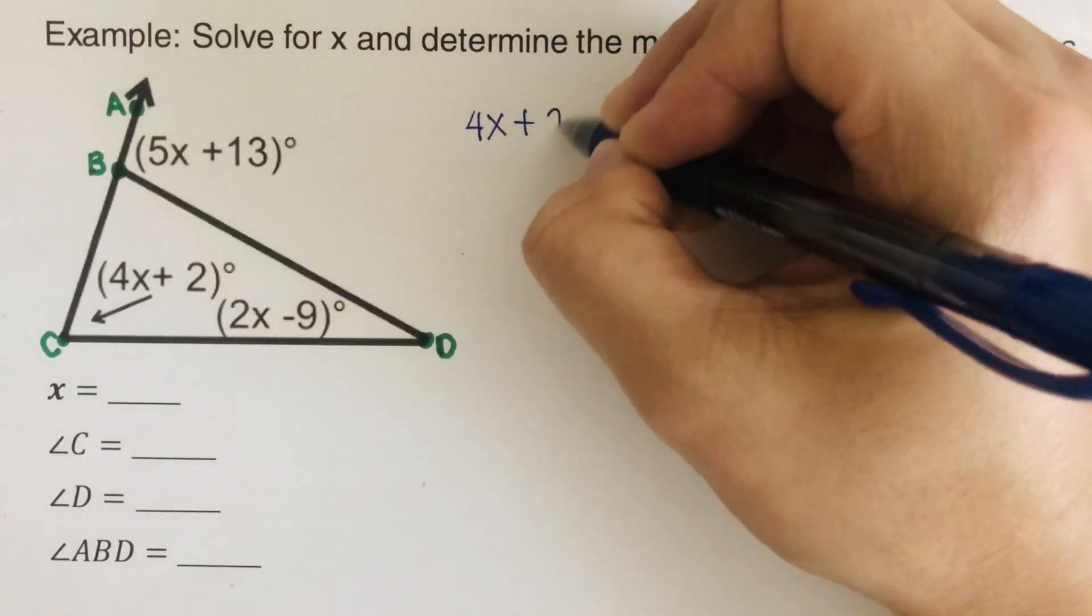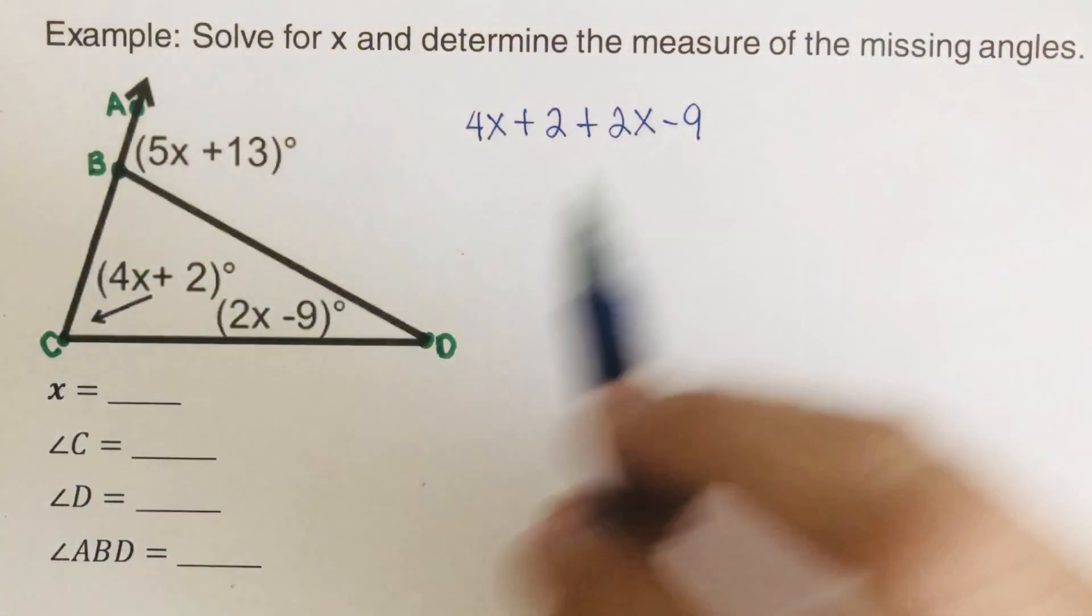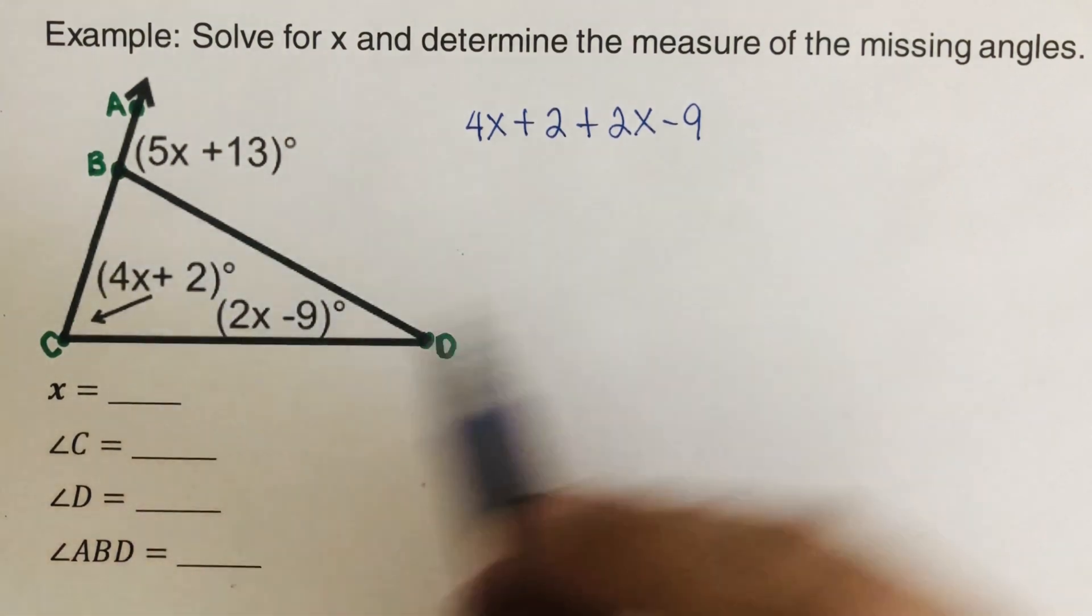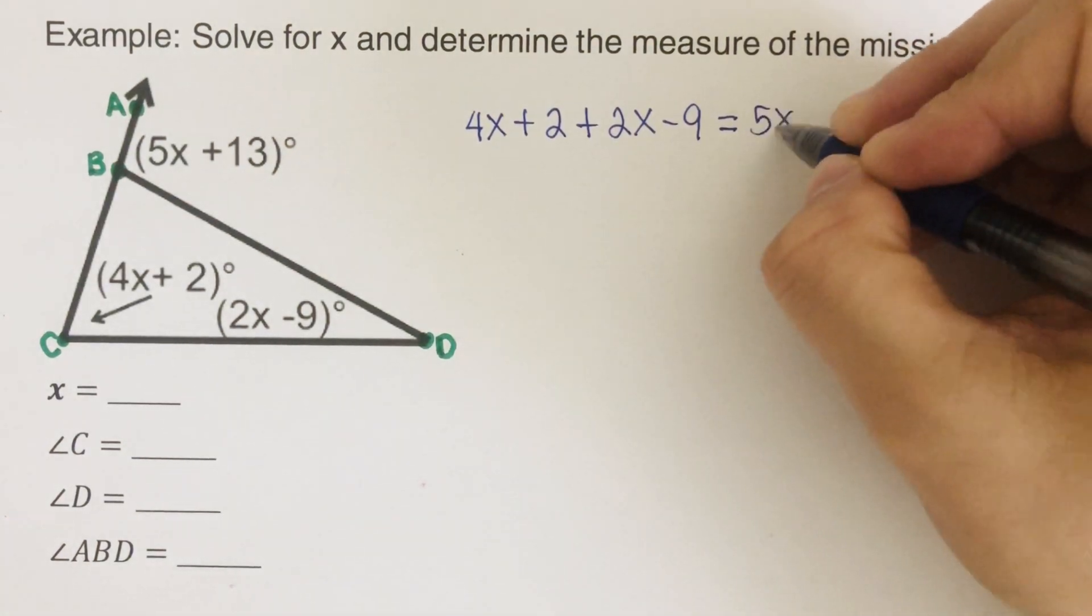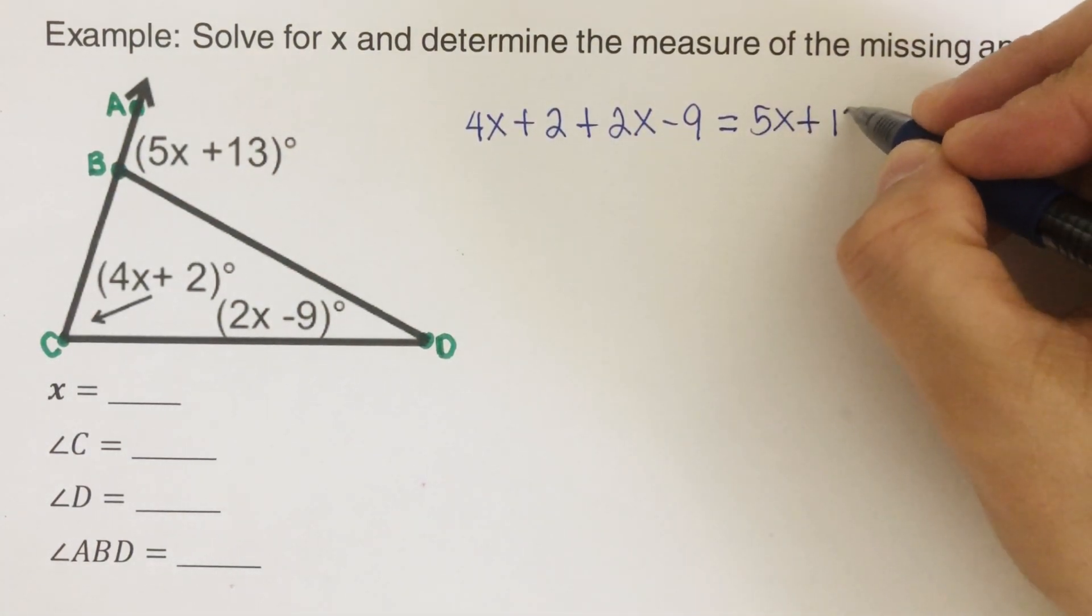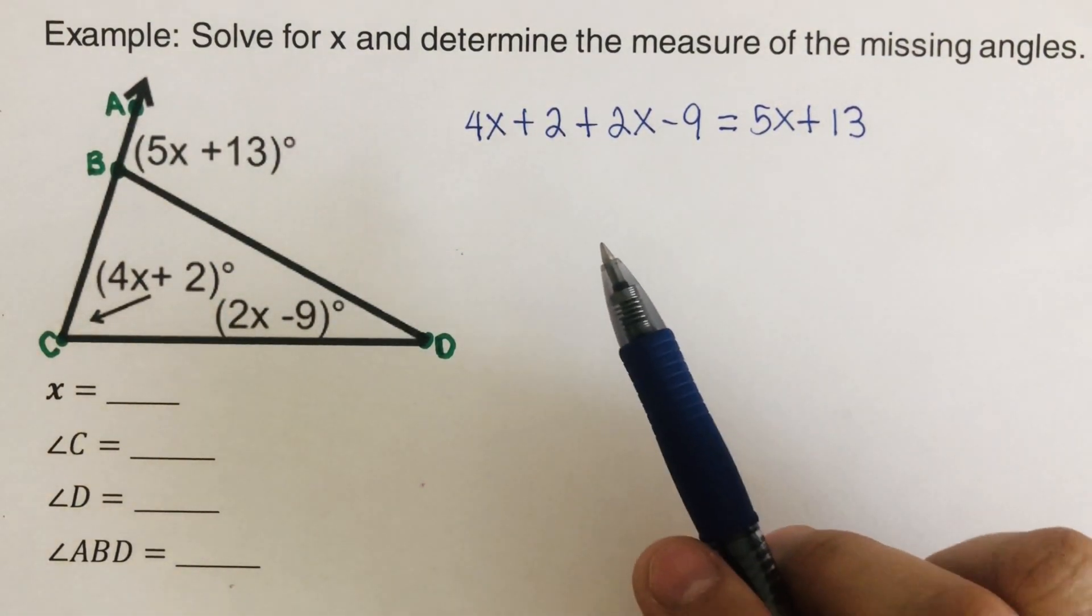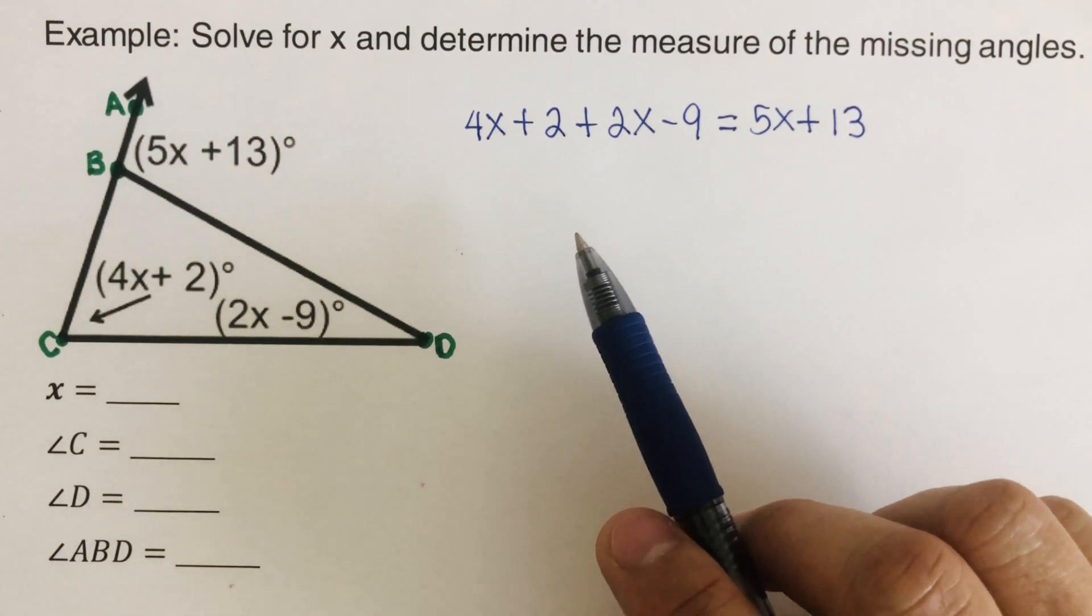4x plus 2 plus 2x minus 9. So these are the two remote interior angles. And that is equal to the exterior, which is 5x plus 13, which is the exterior. Now, this time around, I would encourage you to pause this video and try this problem out on your own. Solve for x and when you're done, unpause it and check your answer.